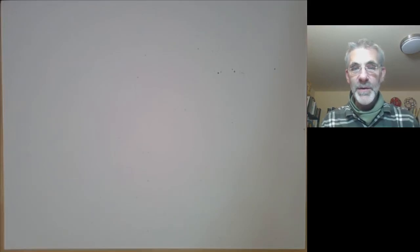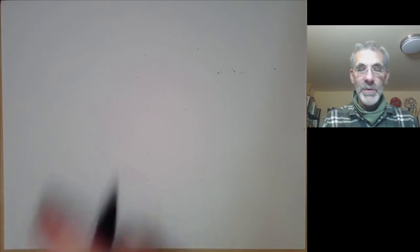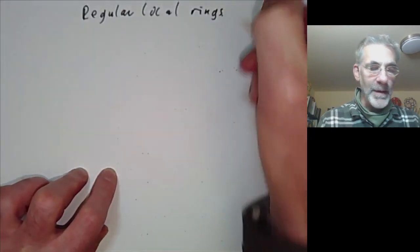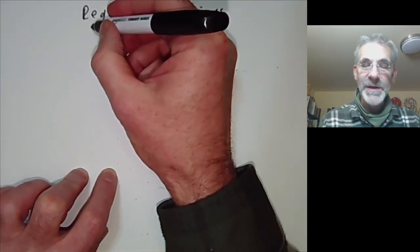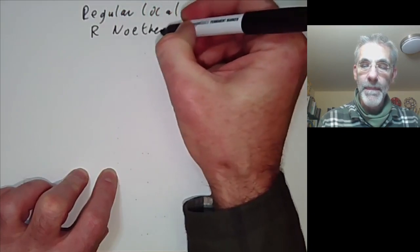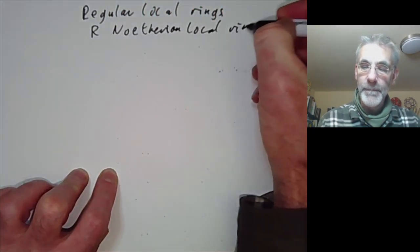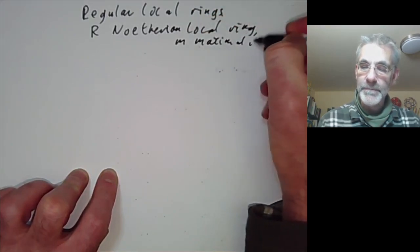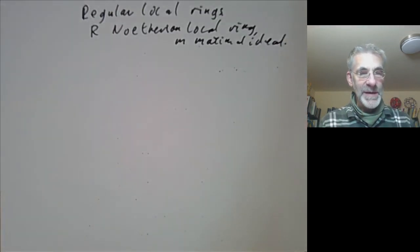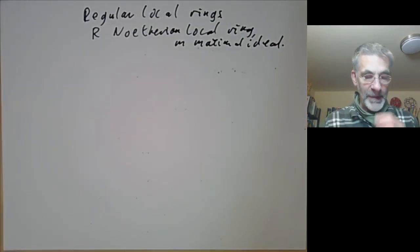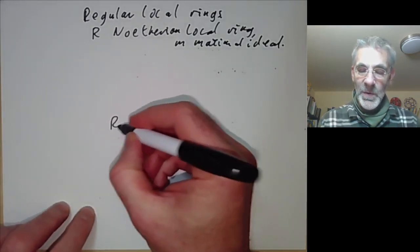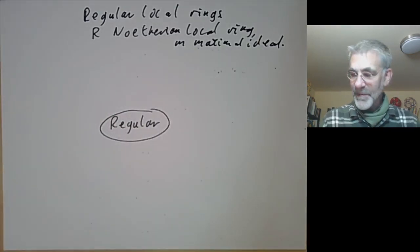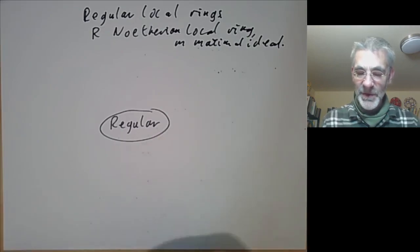This lecture is part of an online commutative algebra course and will be about regular local rings. To set up notation, R will be a Noetherian local ring and M is its maximal ideal. There are several properties of local rings, and the one we're going to talk about today are regular rings. There's a sort of nested family of properties that go as follows.